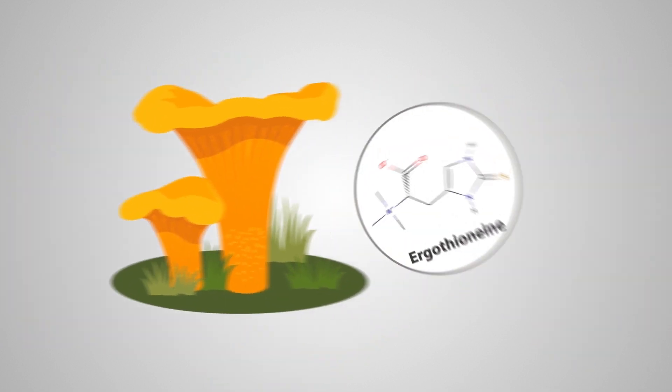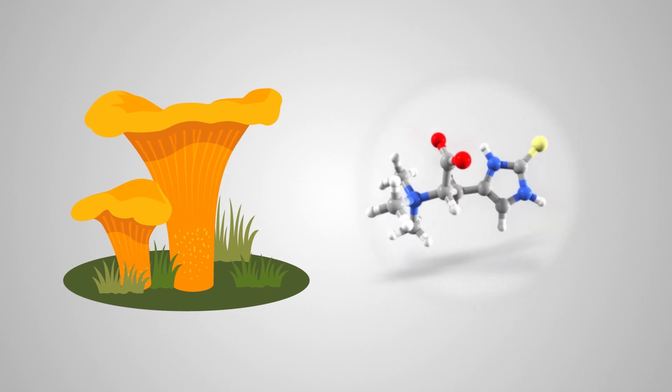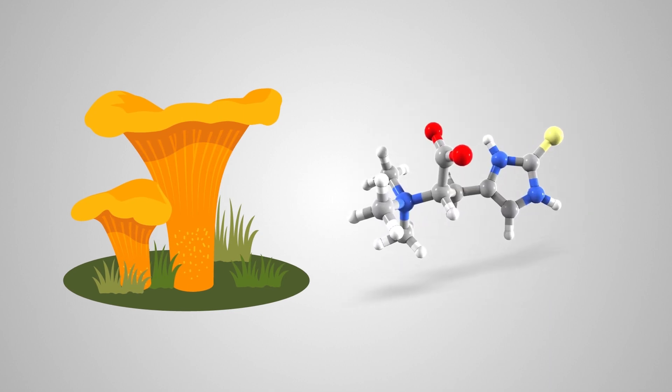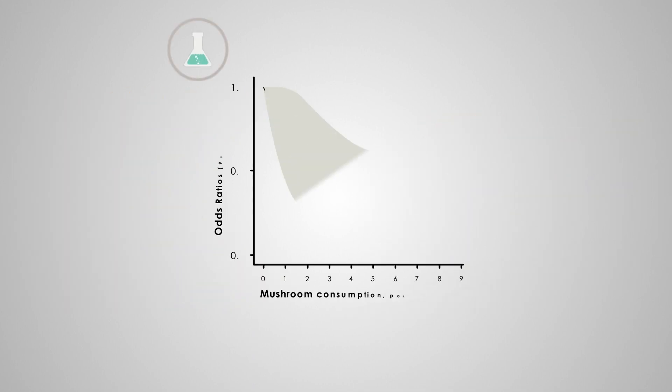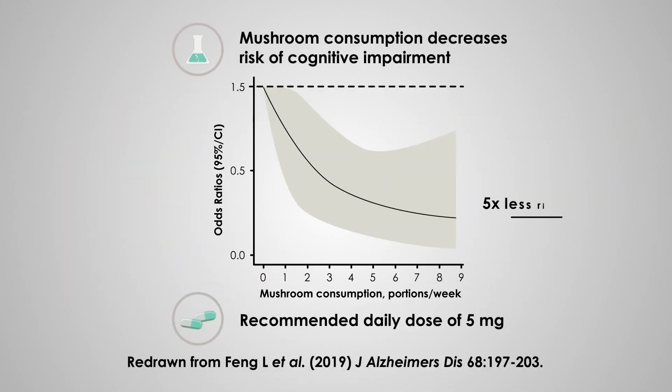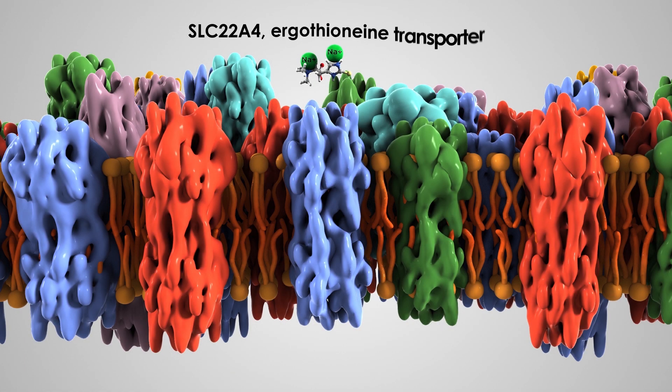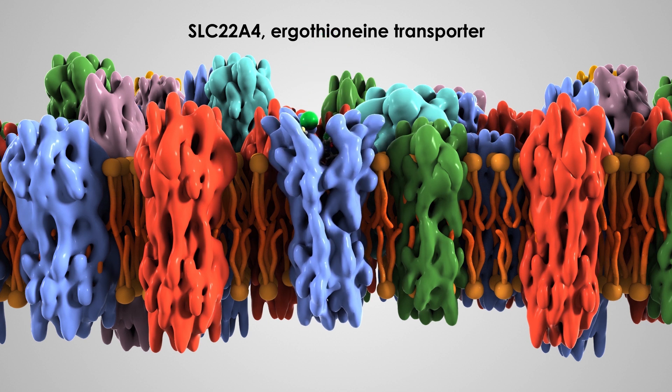Many transporters have been selected by evolution, like the transporter for ergothionine, a natural antioxidant in mushrooms. One study showed 1.5 mushroom servings a week halved the chance of mild cognitive impairment. Nine servings decreased it fivefold. But no transporter means no uptake. It's as simple as that.